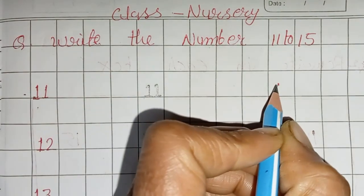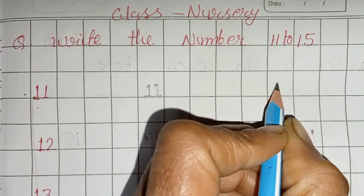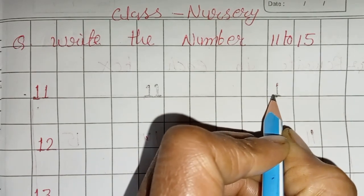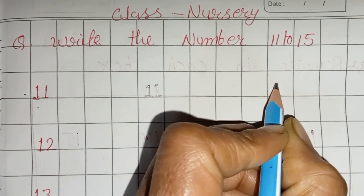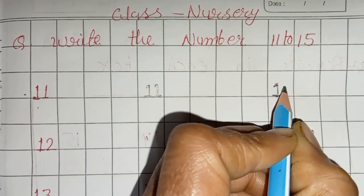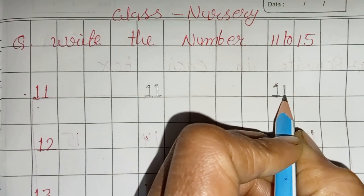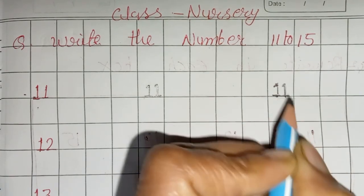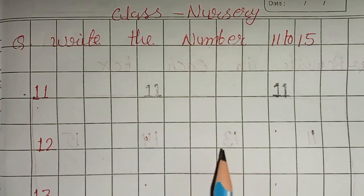We will draw it: one standing line, then the sleeping line, one slanting. Write the number 11.